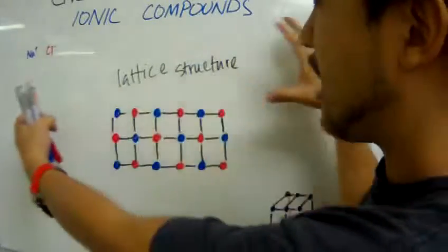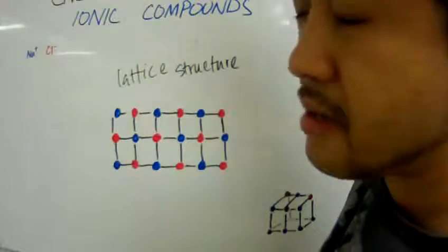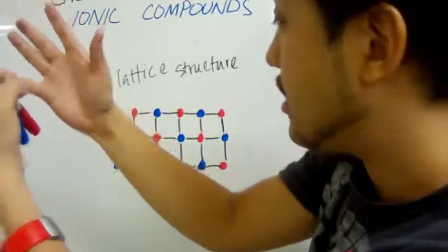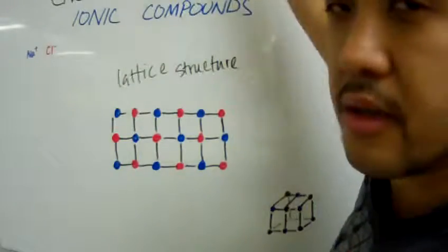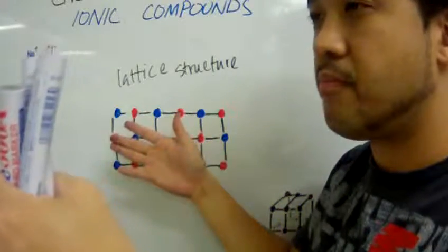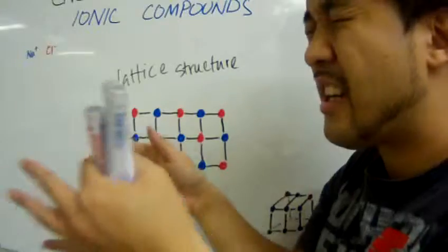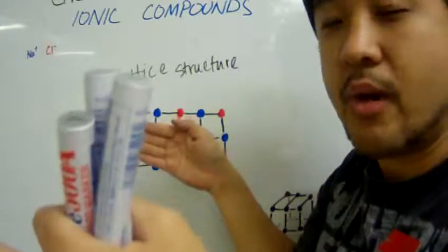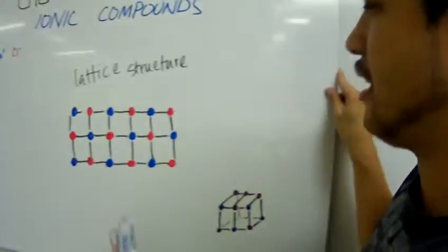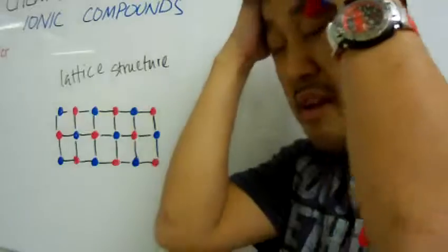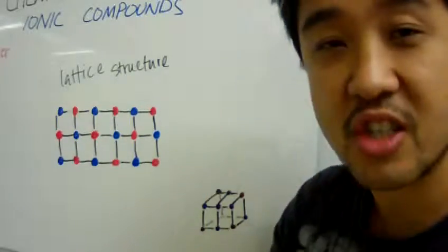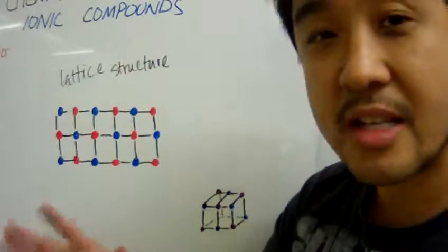This structure expands until your imagination can't take you any further. Not only does it expand across the board, it also expands vertically and horizontally — there are layers and layers of it, all connected together, forming an almost unimaginable lattice structure.